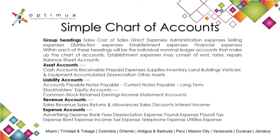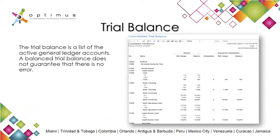Establishment expenses may consist of rent, repairs, and balance sheet accounts. We have the asset accounts: cash, accounts receivable, repair expenses, supplies and inventory, land, buildings, vehicles and equipment, et cetera. Liability accounts include payables, current payables, loans, long-term stockholders, et cetera. Revenue is basically the first part of the income statement: sales revenues, sales returns, allowances, sales discounts, interest income, unexpensed discounts, advertising expense, bank fees, depreciation expense, payroll, et cetera.